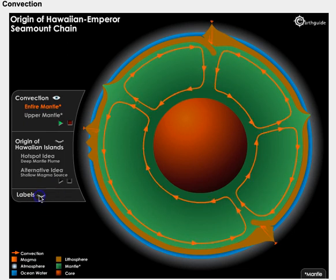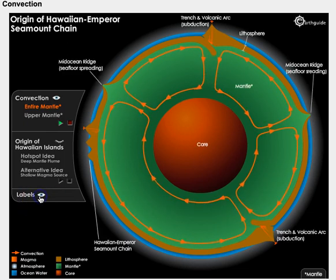Let's look at the full labels. This will be the portion where seafloor spreading is happening—the mid-oceanic ridge. And this is where subduction occurs, forming your volcanic island arc and your trench.